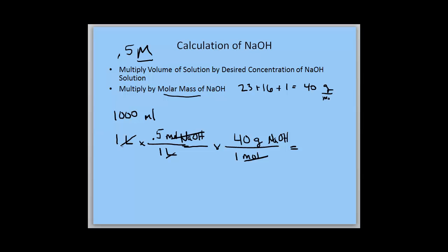So 1 times 0.5 times 40 gives us 20 grams of solid NaOH.